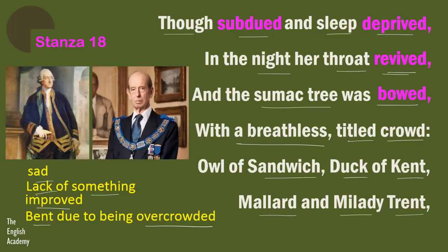Although the nightingale was sad, depressed, and had not got adequate sleep, during the night time her throat got better. In the previous stanza her throat had gone hoarse, but now it revived and improved. So the next night there was a concert at the sumac tree and the nightingale sang again. The sumac tree was bowed — there was a huge crowd on the tree which had gathered to hear the nightingale's concert. He says it was a breathless, titled crowd, meaning a royal gathering.